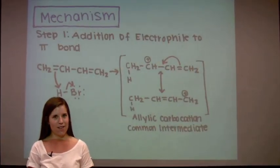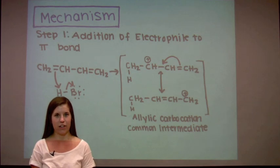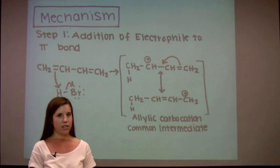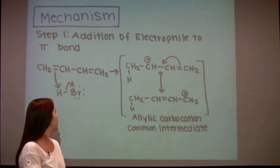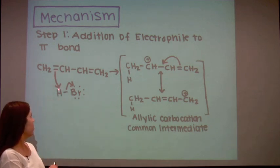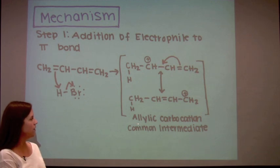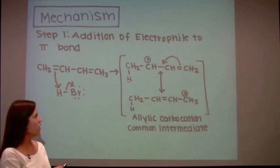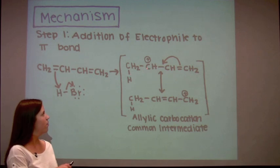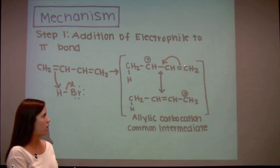Now we will look at the mechanism of this reaction. There are two steps. Step one is the addition of the electrophile to the pi bond. The pi electrons deprotonate hydrogen bromide, resulting in an allylic carbocation. The proton is bonded to the first carbon and the positive charge is on the second carbon. Note that the pi bond is still between the third and fourth carbon.